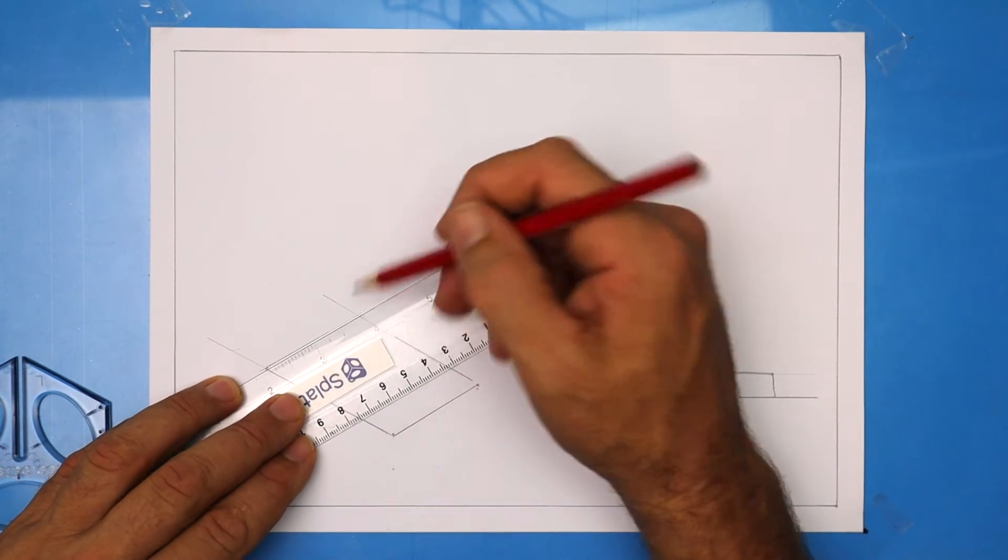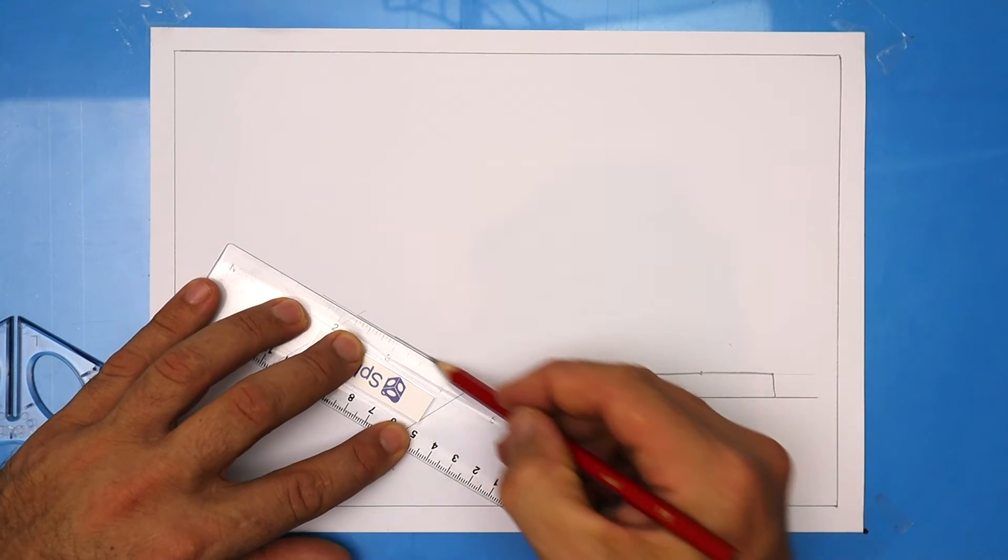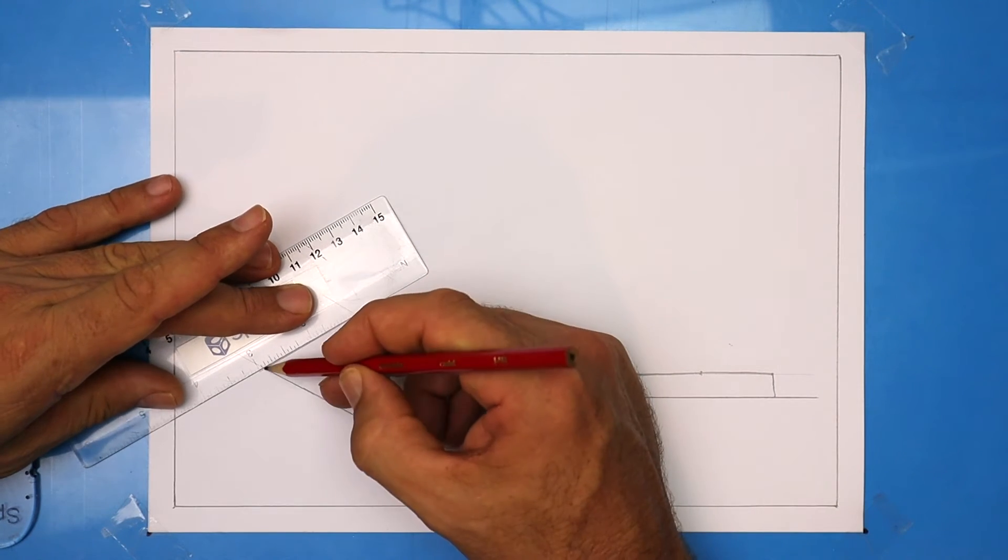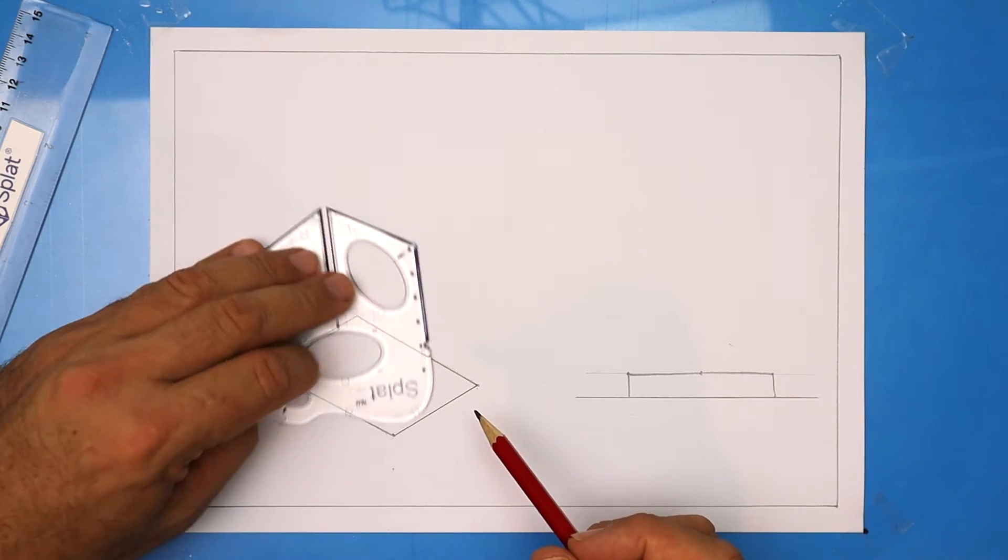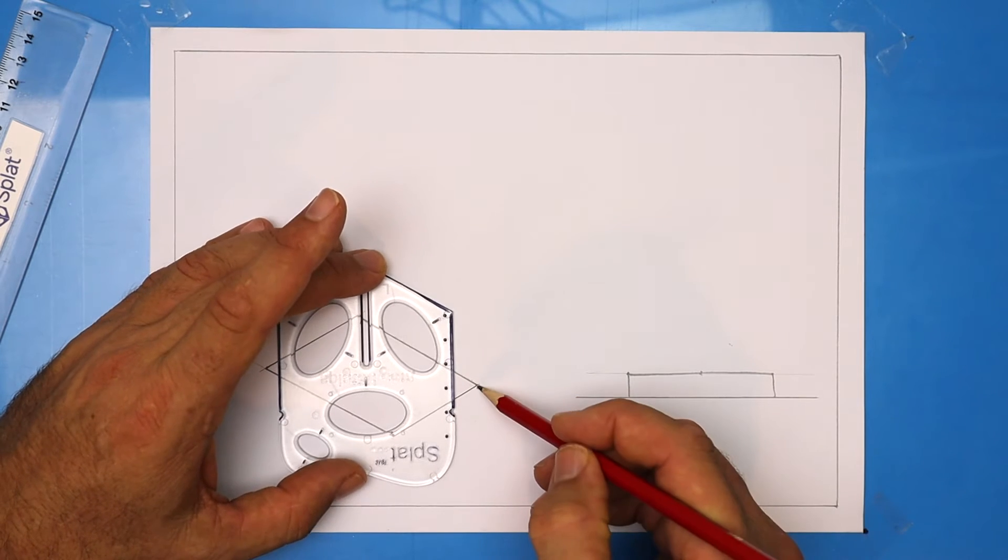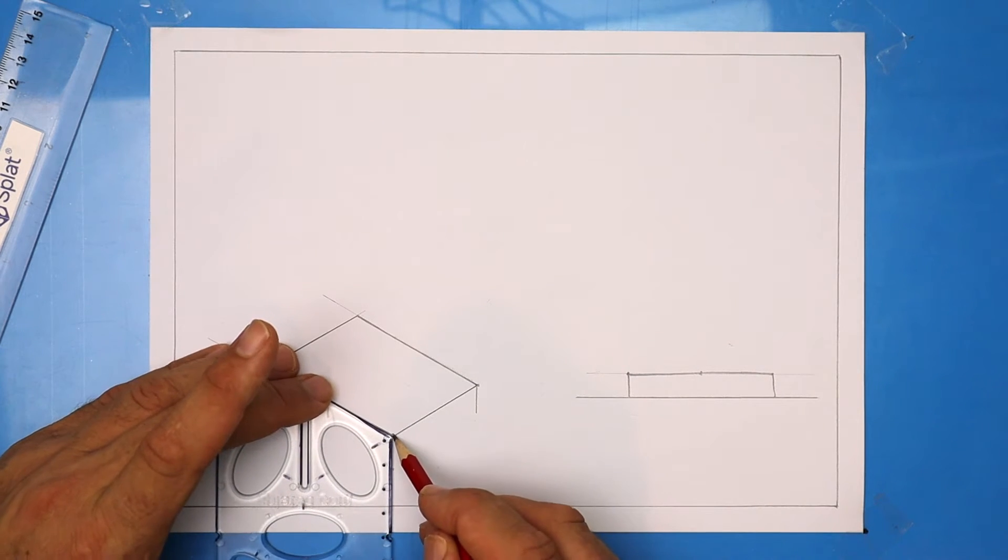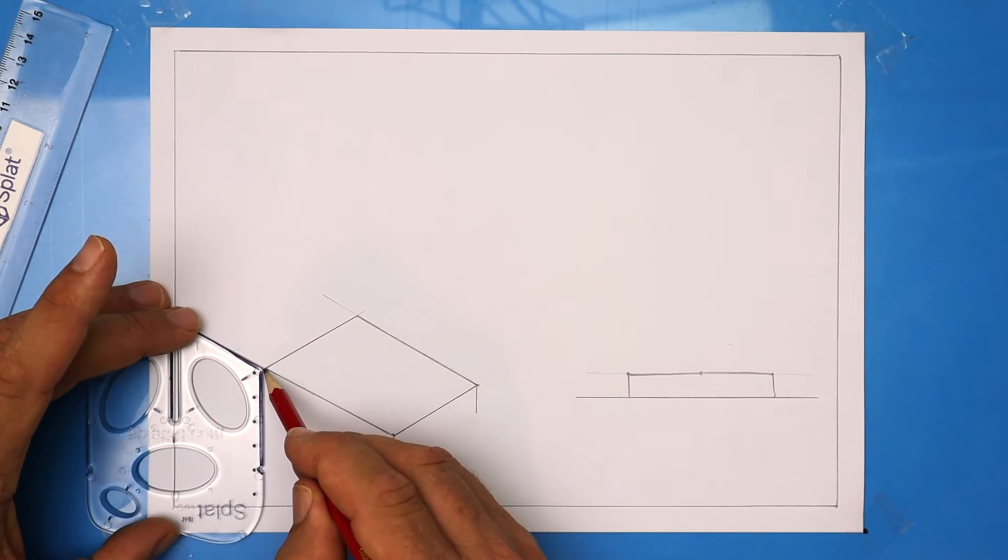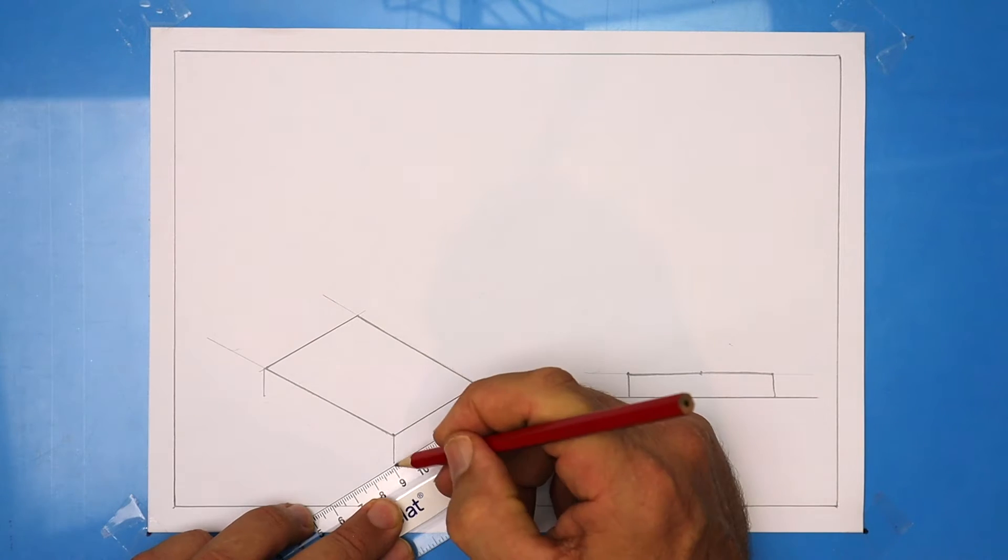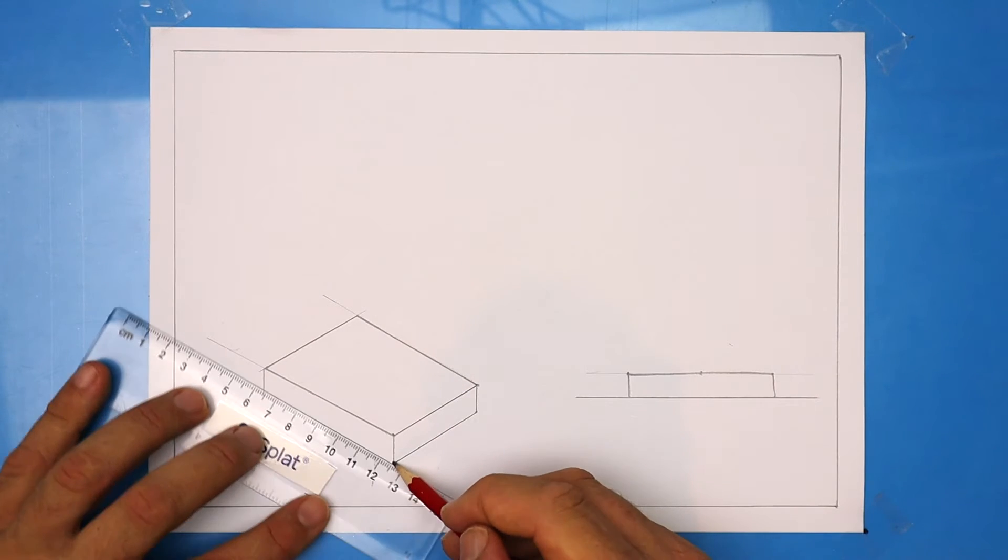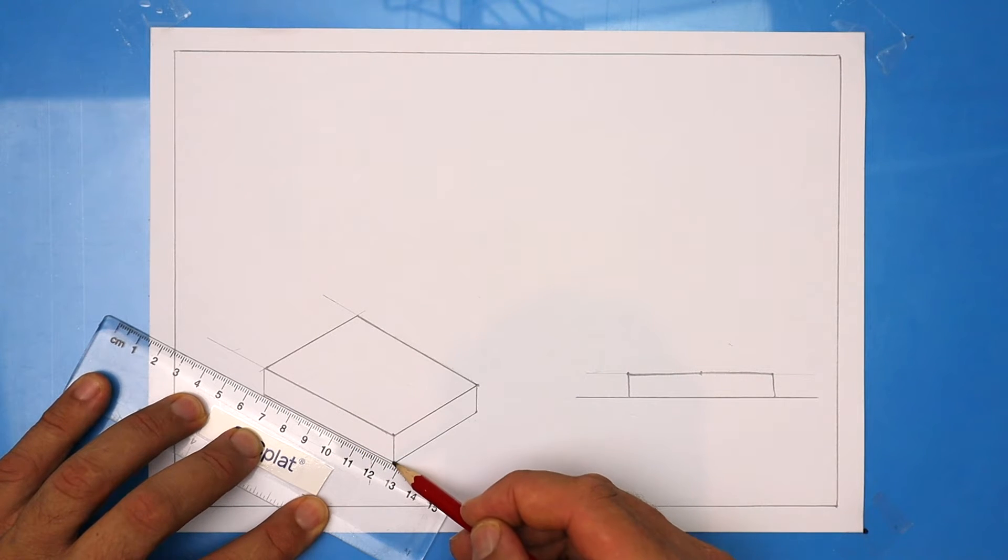Now I'm firming it in but if I was you I would leave it all light until you've finished your drawing. It'll avoid some erasing. Now if I turn that upside down it's 1cm or 10mm in between those little blips. So I'm dropping down 10mm from each of those corners and then I'm joining those up.